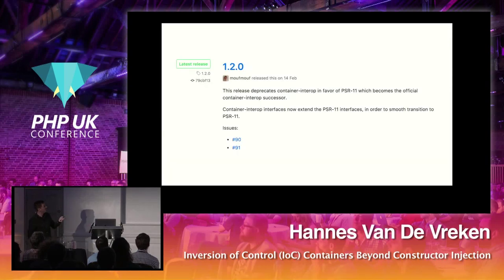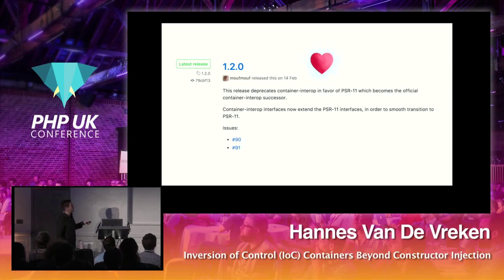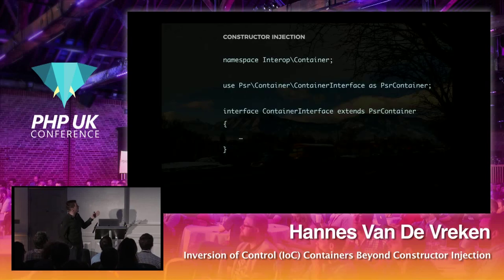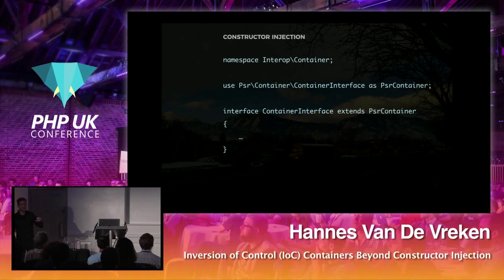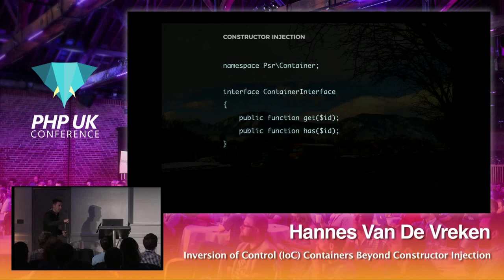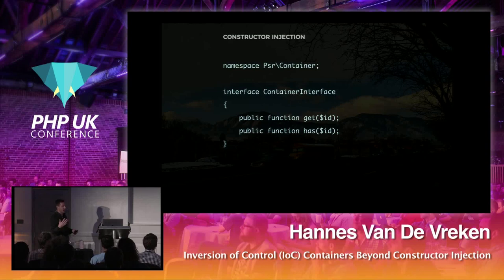Last year on Valentine's Day they basically deprecated containerinterop in favor of PSR-11 — some love for the PHP-FIG. The interop container now just extends the PSR container and doesn't add anything to it. The PSR container has two simple methods: the first is get, which returns the resolved object, and the second is a boolean method — has — that returns yes or no: can you resolve this or not.